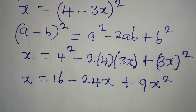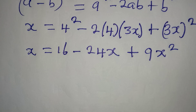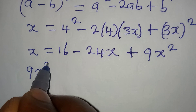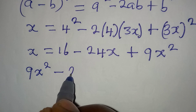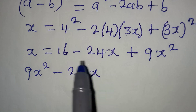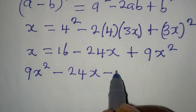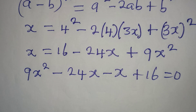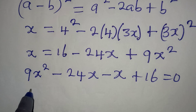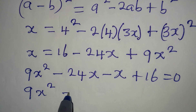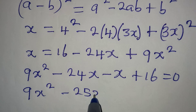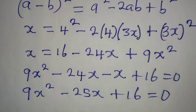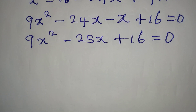Then plus 3x squared is 9x squared. Let's arrange this in a better way: 9x squared first, then minus 24x, minus some x, plus 16 equals 0. So we have 9x squared minus 25x plus 16 equal to 0. This is now a quadratic equation.